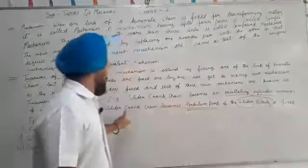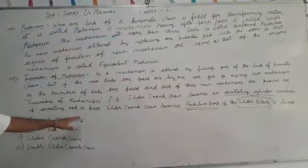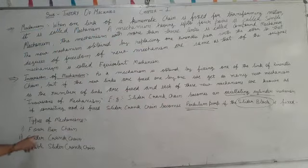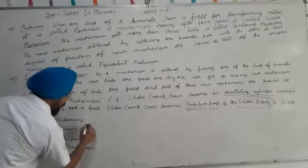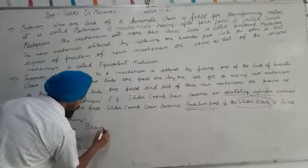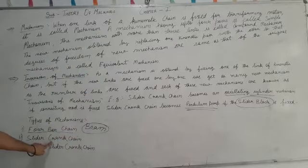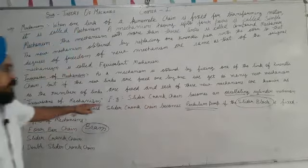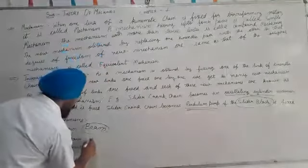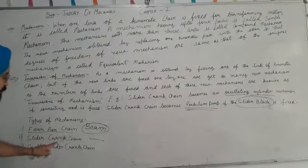Inversion of the slider crank chain — let us discuss the types of mechanisms. Four bar chain: an example is a beam engine, which is the inversion of the four bar chain. For the slider crank chain, the oscillating cylinder engine and pendulum pump are examples of inversions. For the double slider crank chain mechanism, the inversion is the elliptical trammel.